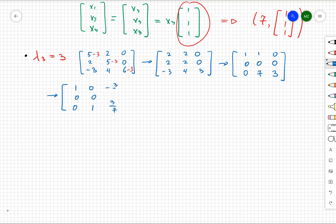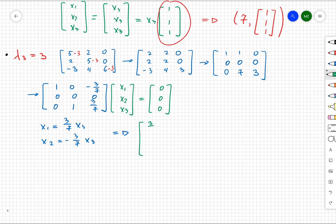[1, 0, -3/7; 0, 0, 0; 0, 1, 3/7]. Doing the same procedures that we did for our previous two eigenvectors, we're going to obtain that x₁ = 3/7 x₃ and x₂ = -3/7 x₃. So our eigenvector, you can see, is going to be equal to [3, -3, 7]. And so we have the following pair.